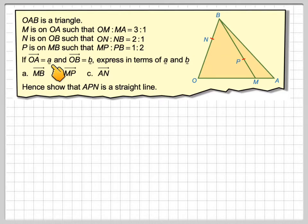Vector OA is a and vector OB is b. Find in terms of a and b vectors MB, MP, and AN, and hence show that APN is a straight line. So we've got to show that this is going to be a straight line.